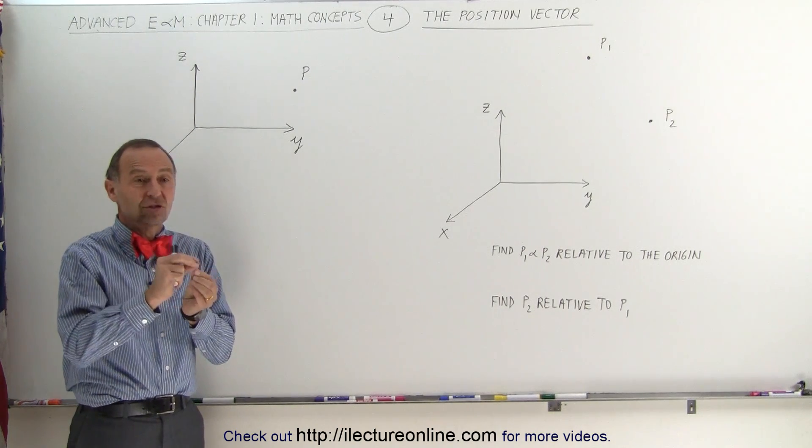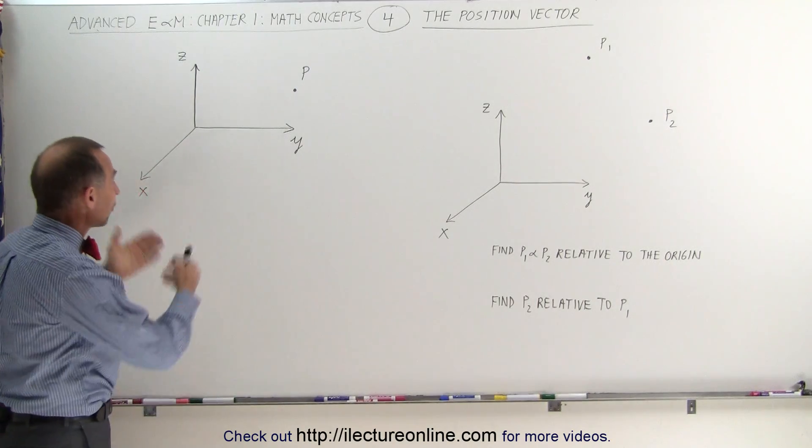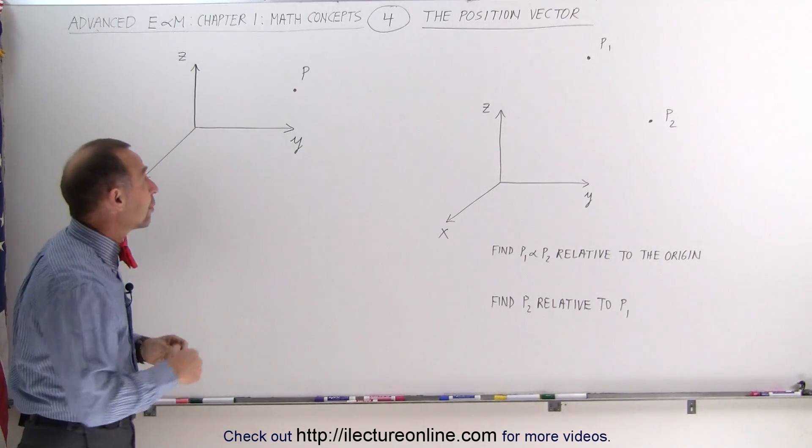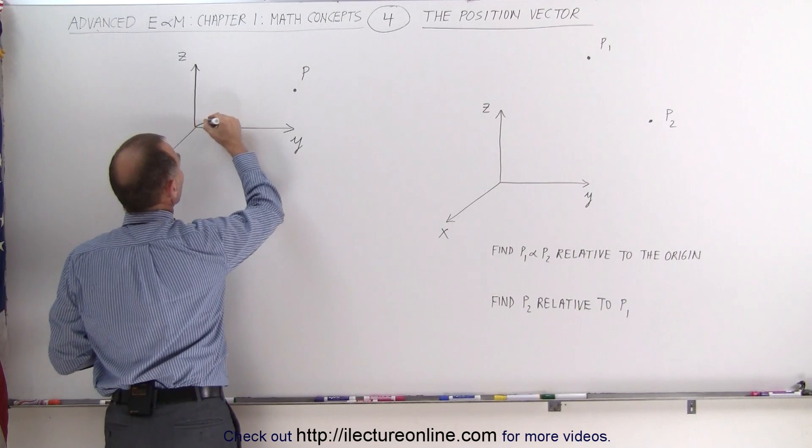We need to be able to position a point in space in the x, y, z direction. So, for example, let's say we want to know the position of this particular point. What we do is we draw a vector from the origin to that point, and we call that the position vector.